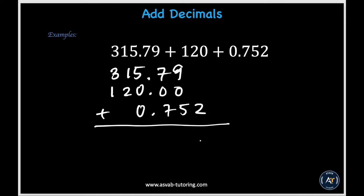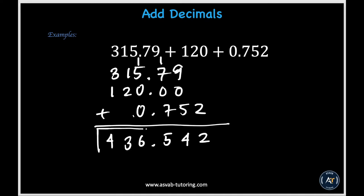In the thousandths place we only have a 2, so we put down 2. In the hundredths place, 9 plus 5 gives 14 — put down 4 and carry 1. In the tenths place, 1 plus 7 plus 7 gives 15 — put down 5 and carry 1. In the ones place, 1 plus 5 gives 6. In the tens place, 1 plus 2 gives 3. In the hundreds place, 3 plus 1 gives 4. The decimal point goes between the ones and tenths place, between the 6 and the 5. Our final answer is 436.542.